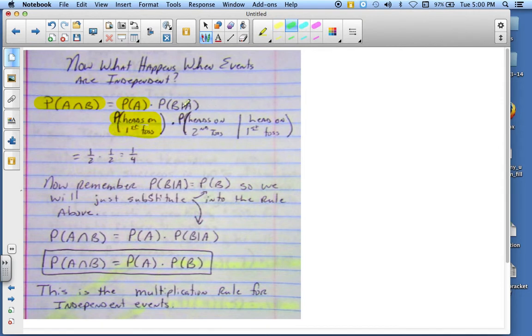Then the next one is the probability of B given A, that you get heads on the second toss given that you've got heads on the first toss.